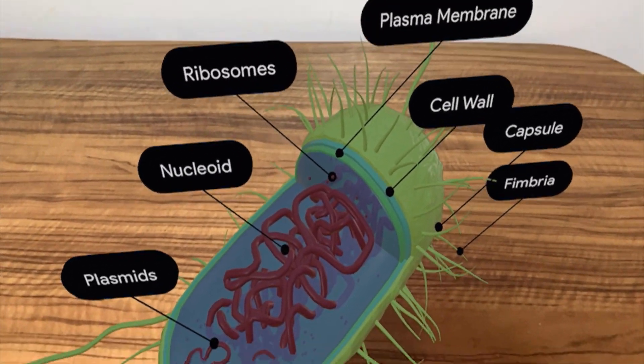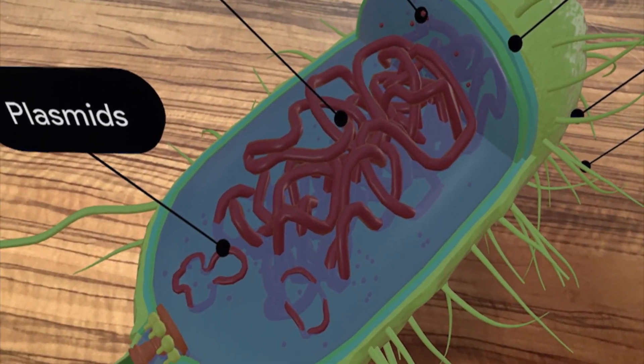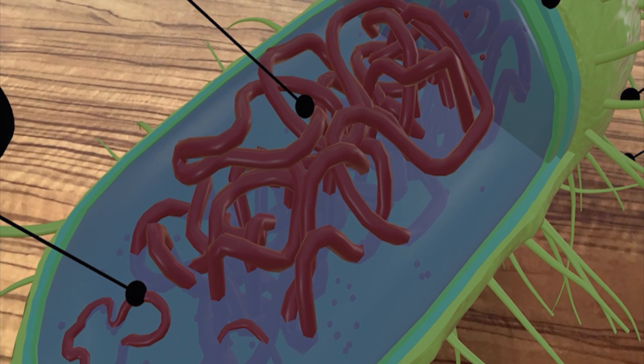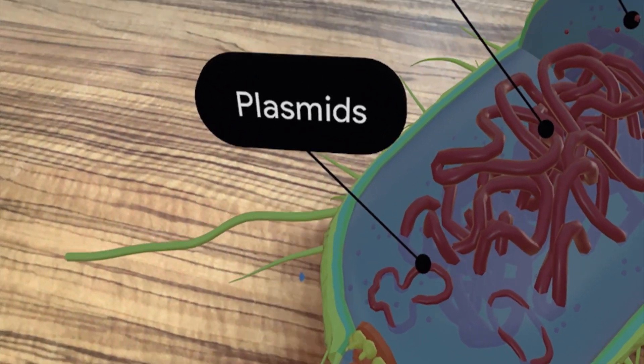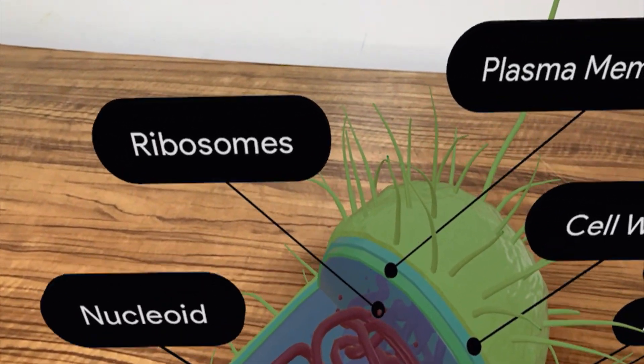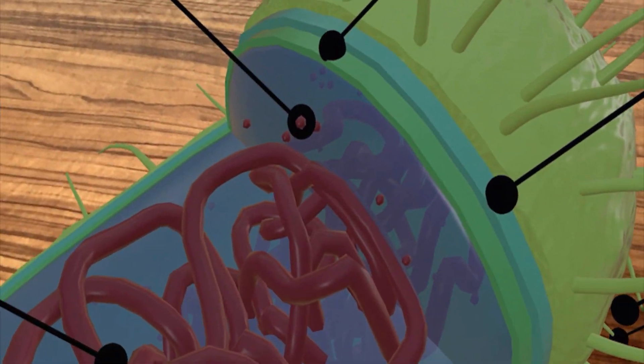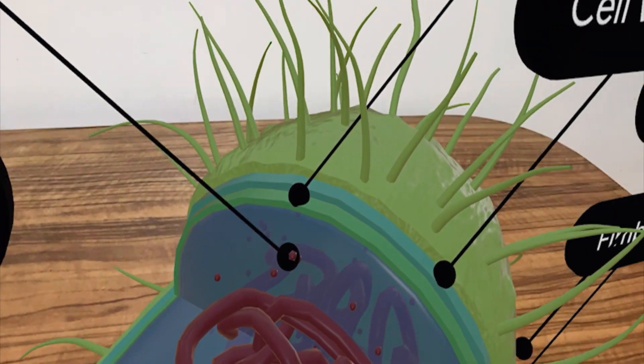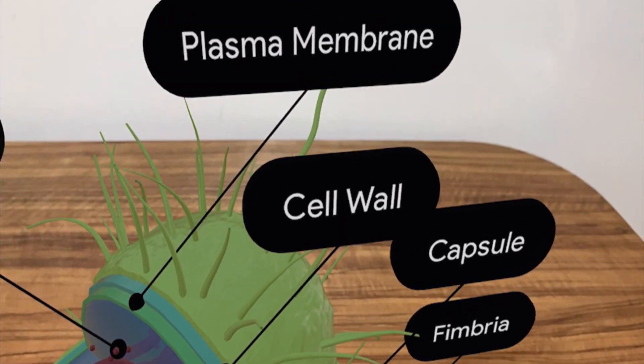Let us see the nucleoid which is nothing but the chromosome, the DNA, the genetic material of the bacteria. You can see the plasmid over here, small extra chromosomal circular DNA structure. You can see ribosomes suspended in the cytoplasm over here and you can see the rest of the structure like plasma membrane, cell wall and capsule.